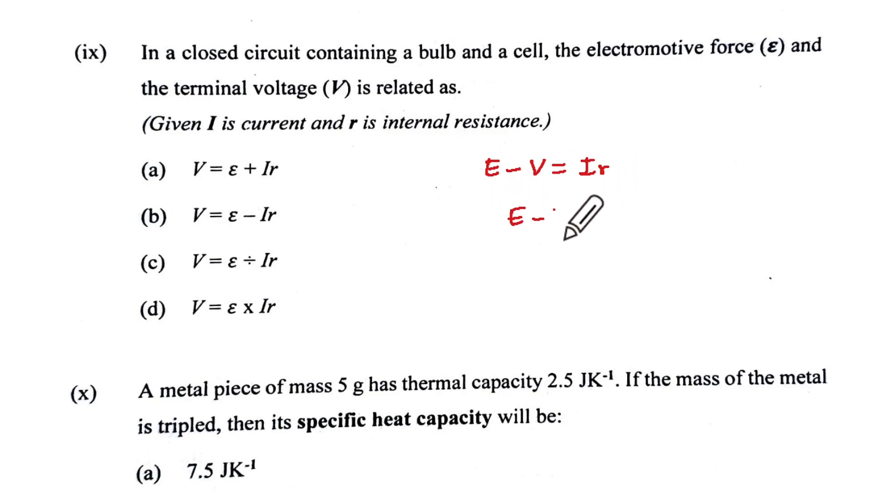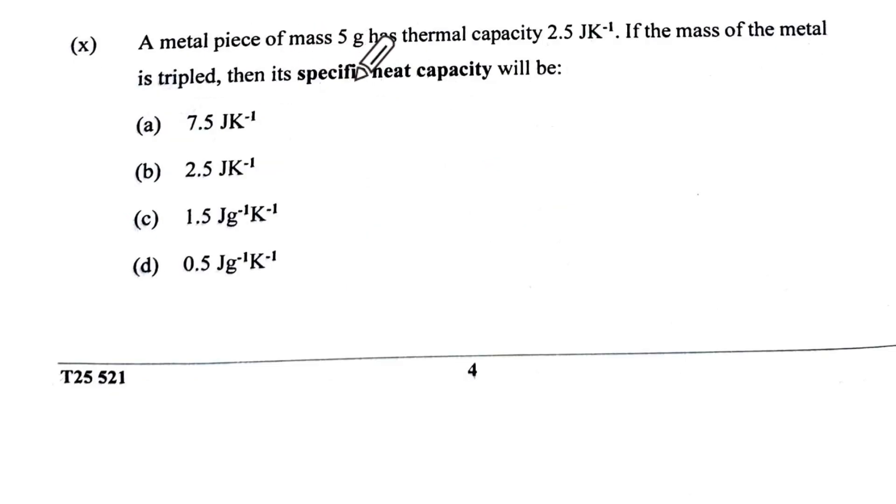Metal piece has mass 5 grams, thermal capacity 2.5 joules per kelvin. The mass of the metal is tripled. Now thermal capacity is m into c, this is 2.5. So if the mass is tripled, the new c dash will be 3m into c. Specific heat remains the same, so it will be 3 times 2.5, that is 7.5, which is option A.